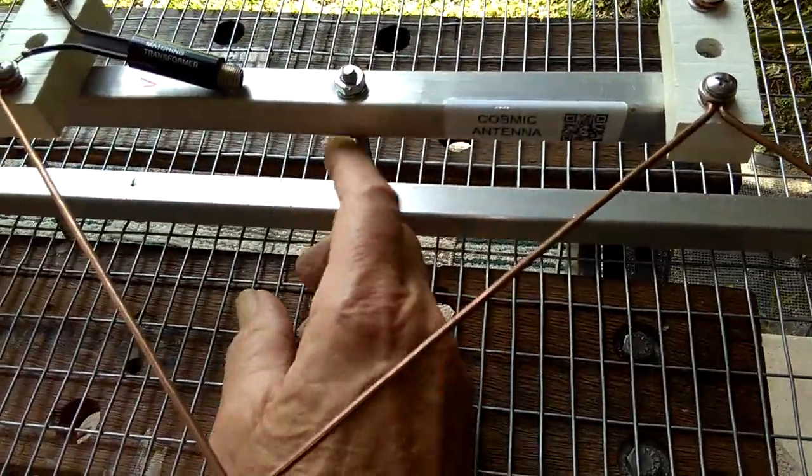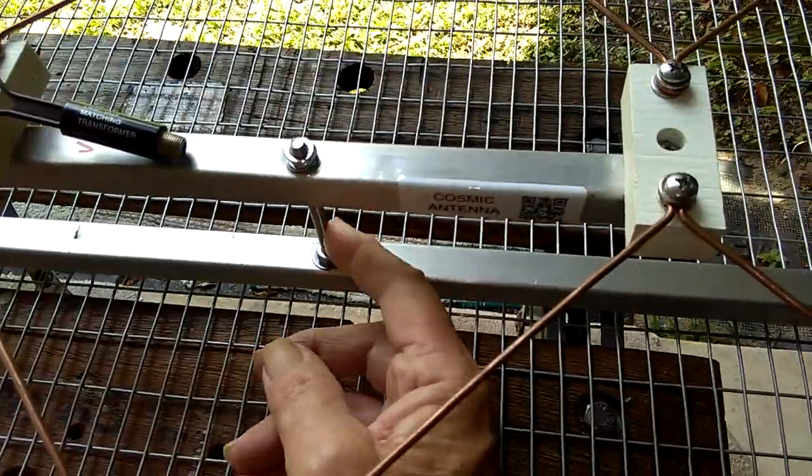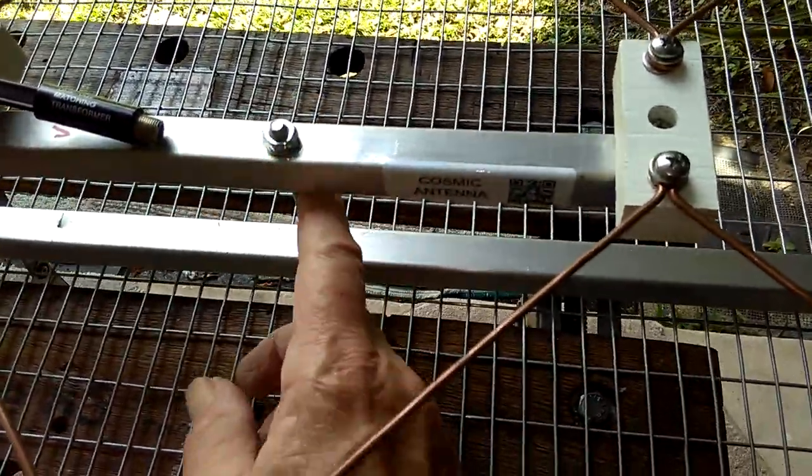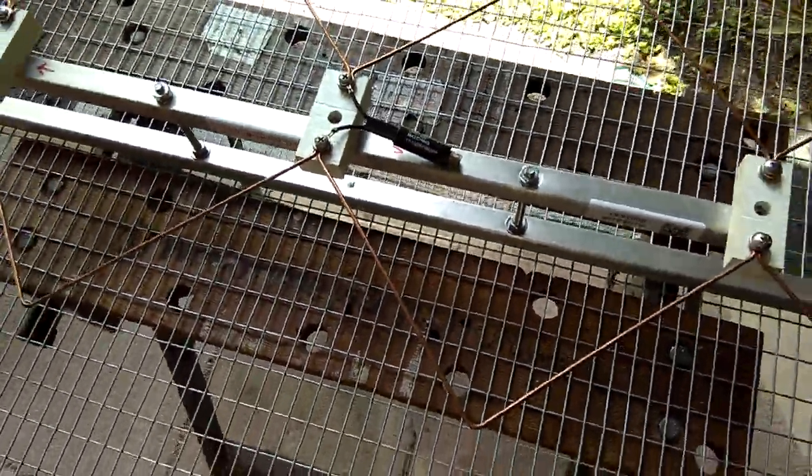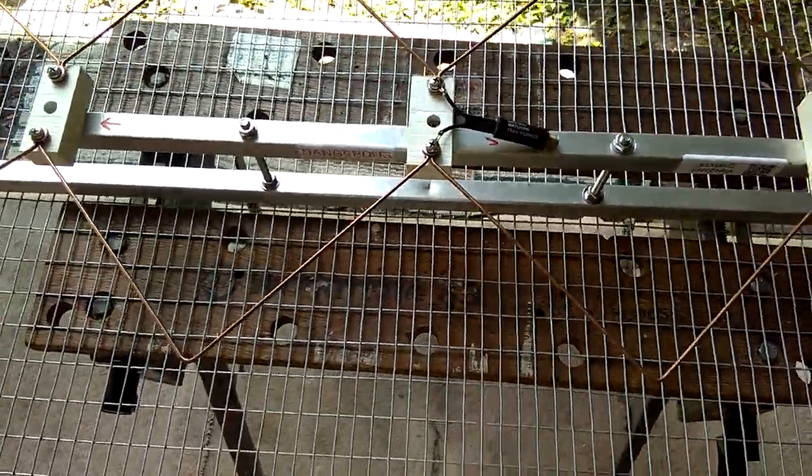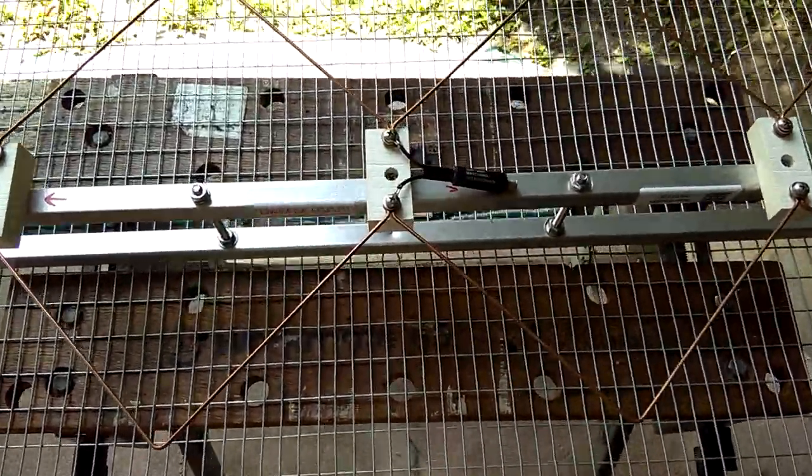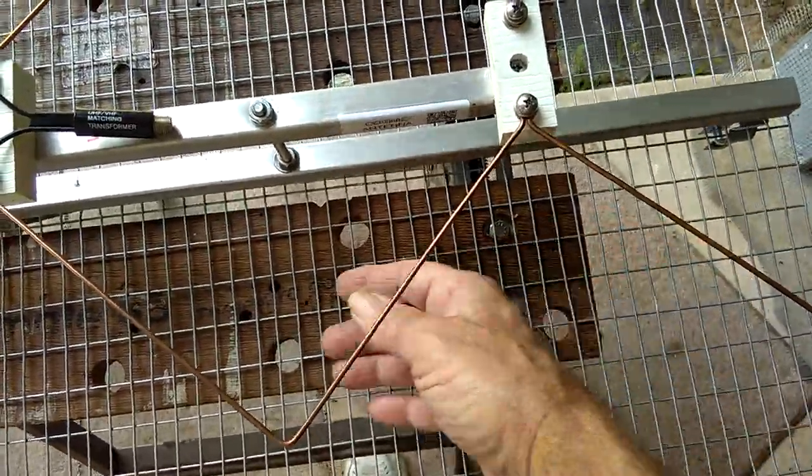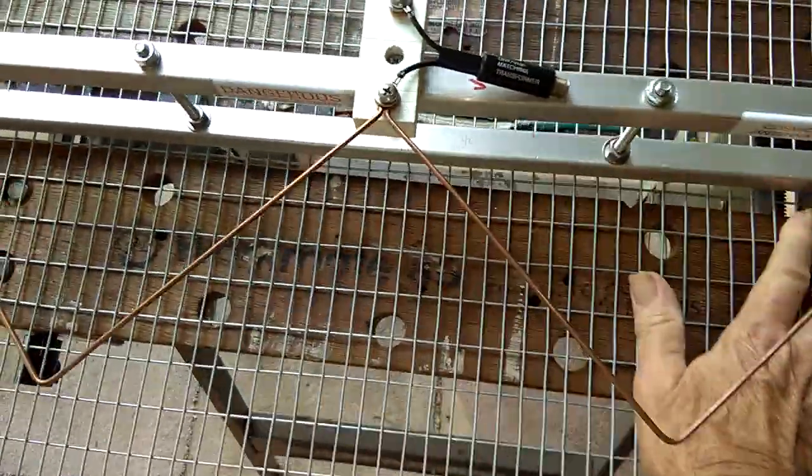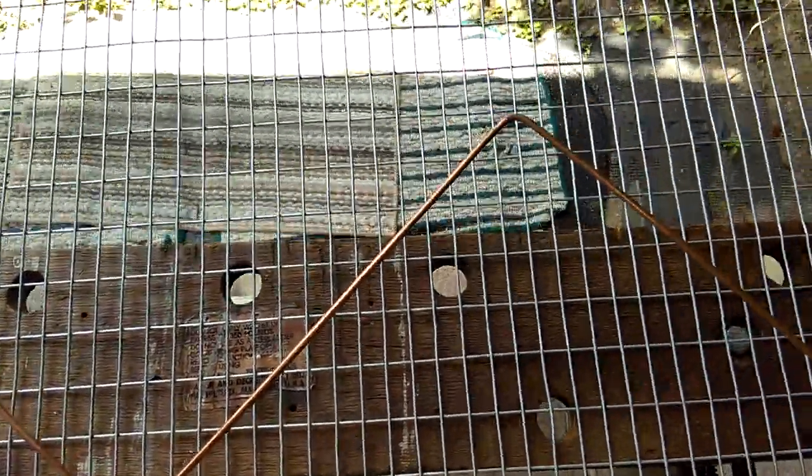These are quarter-inch bolts, they're four inches long, and I just use that to separate the two. You need four and a half inches between a Hoverman element and a reflector grid, whatever you choose for a grid. This grid I said before is 16 gauge galvanized steel. It's very stiff.